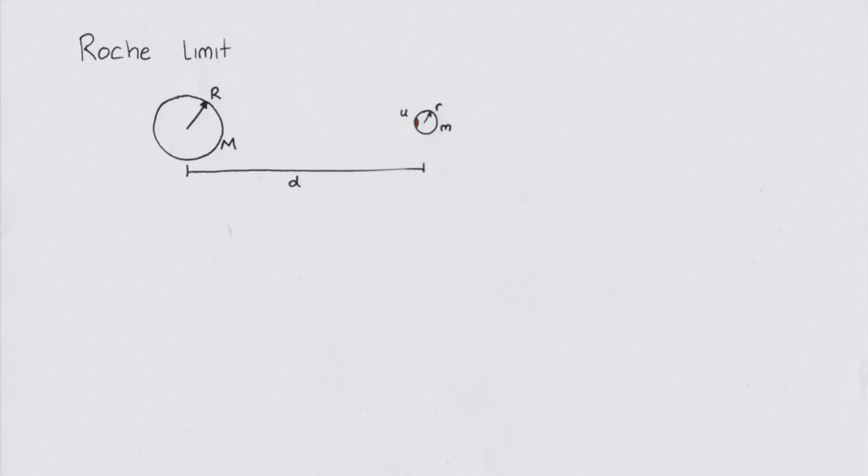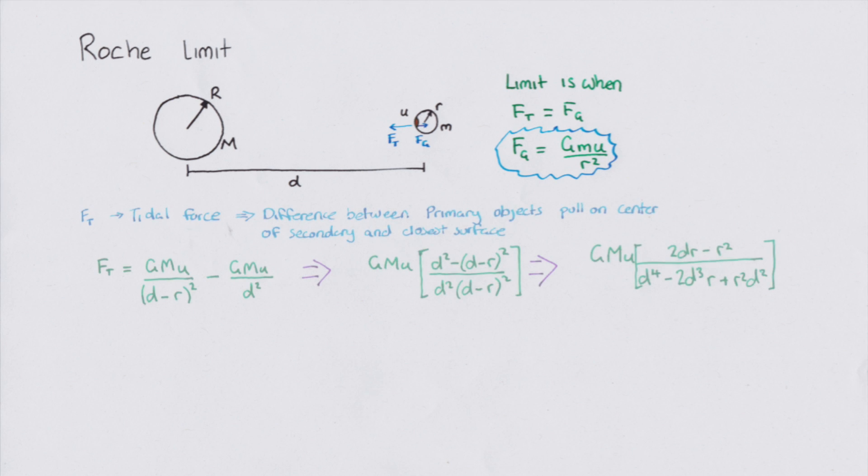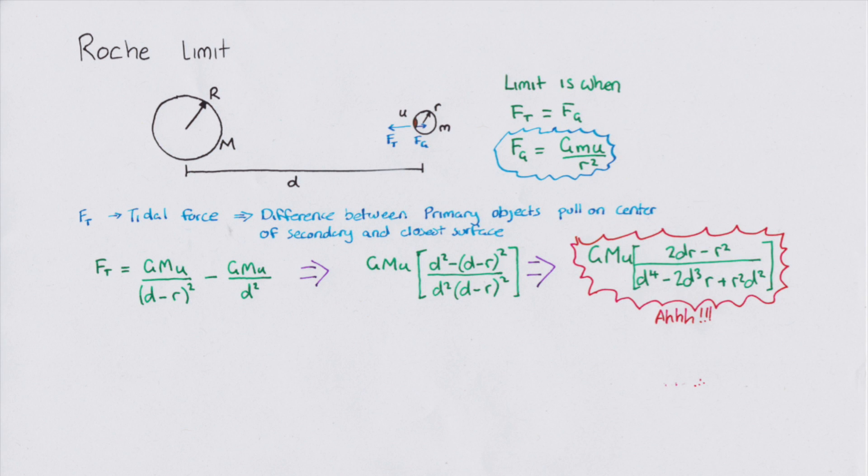Once more, this limit can be calculated by applying the Newtonian force equation. Fg here is the attraction between the object U and the planet itself. So, what about the attraction towards the primary object? Well, this is the tidal force, Ft. And this is the difference between the primary objects pull on the center of the secondary and on the closest surface. At this point, you look at the last equation and go, wow, that looks like a mess.